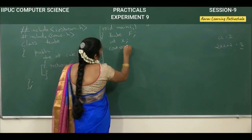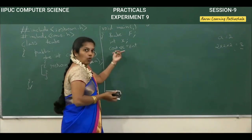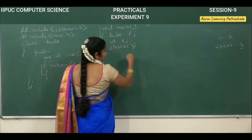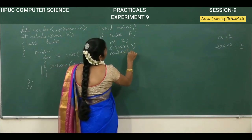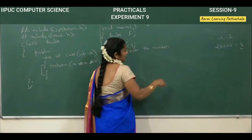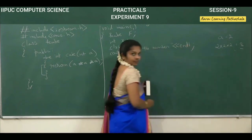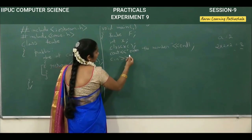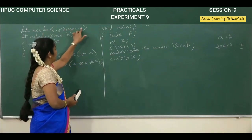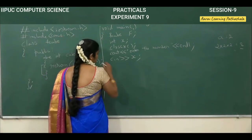If you want to clear the screen, write clrscr. Then cout with the message: enter the number. To move the cursor to the next line, use slash n or endl. Next, cin with the extraction operator to input x. So cin and cout work on the iostream.h header file, and clrscr works on the conio.h header file.